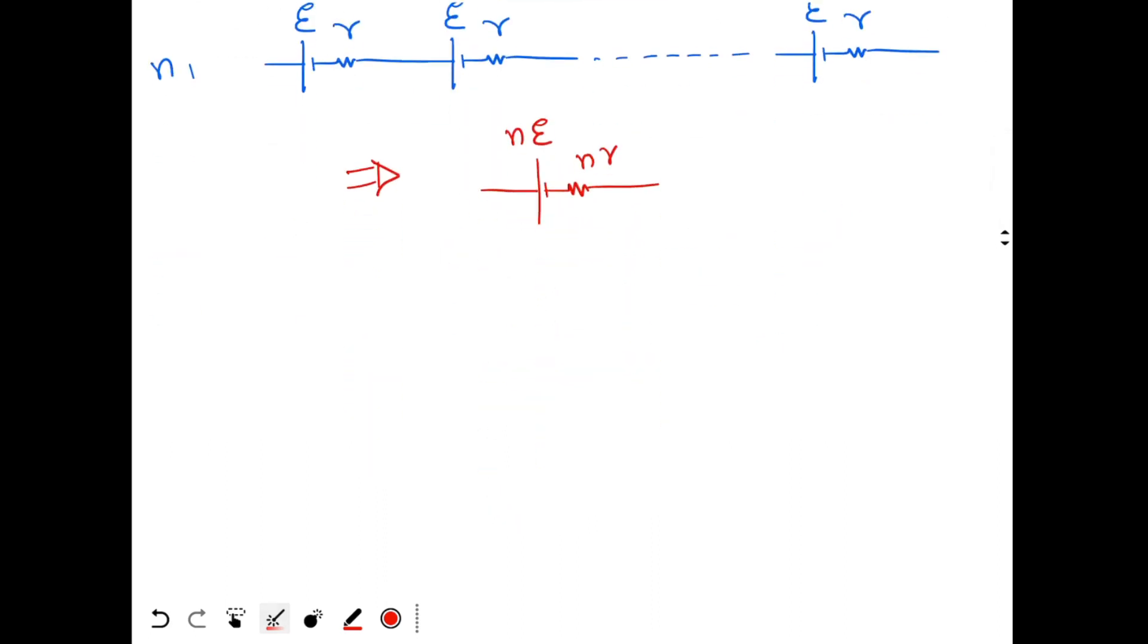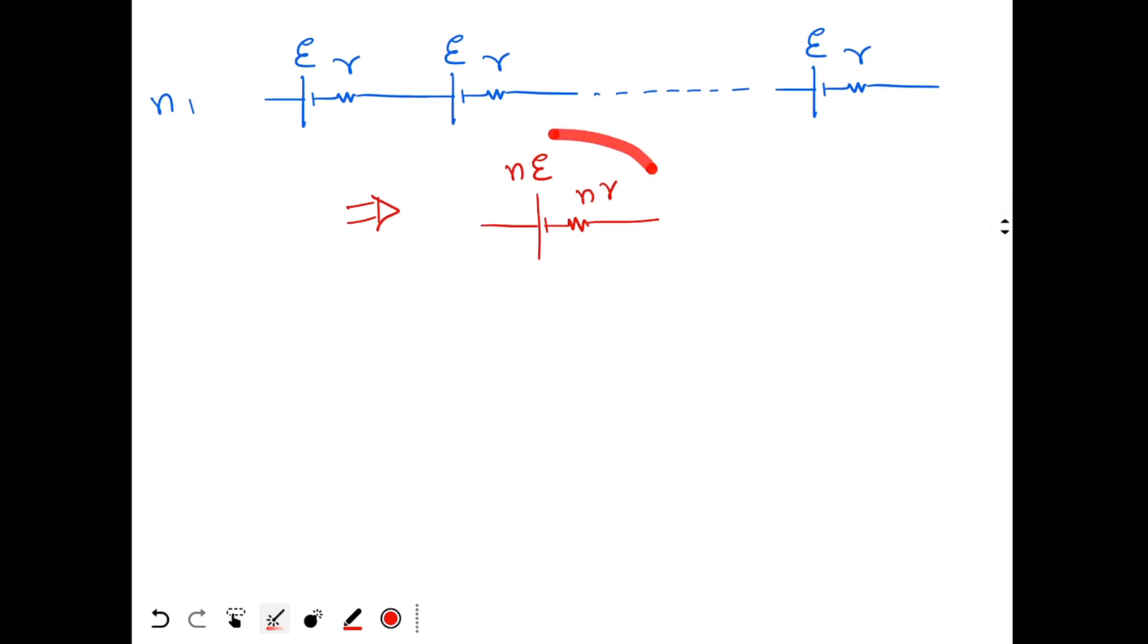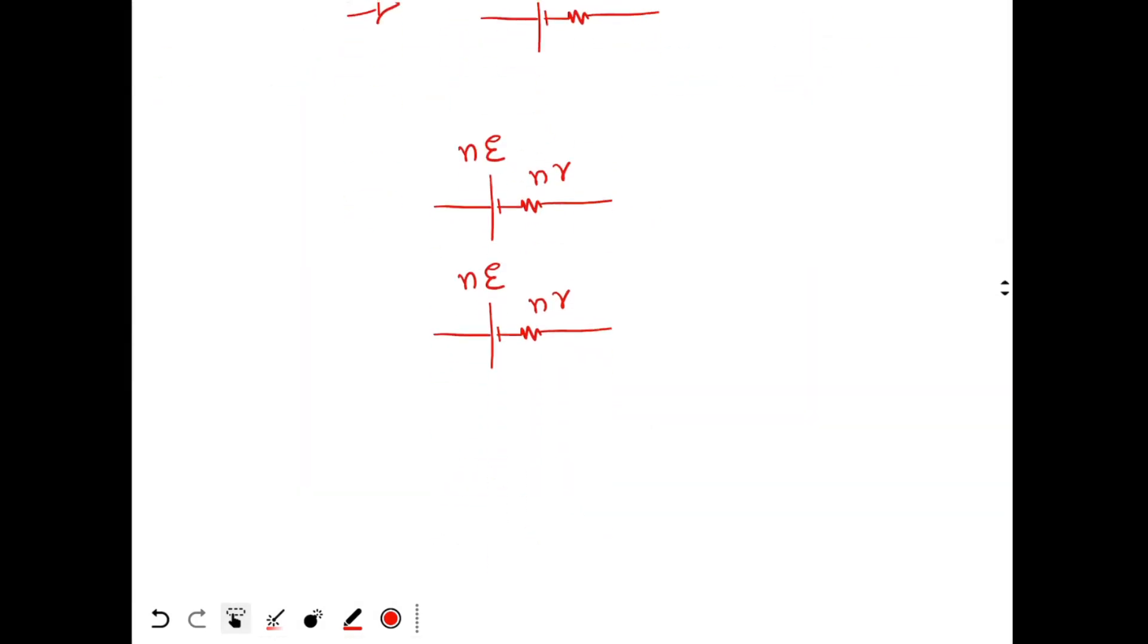Now these batteries are connected in parallel. How many such batteries are connected in parallel? N2. N2 such batteries have been connected in parallel. So like this. So I have got N2 such batteries.